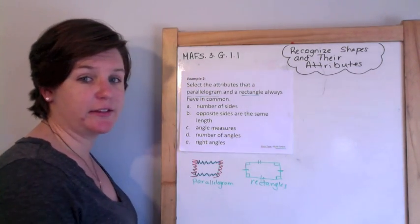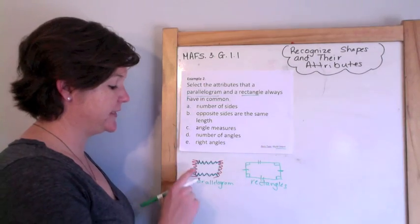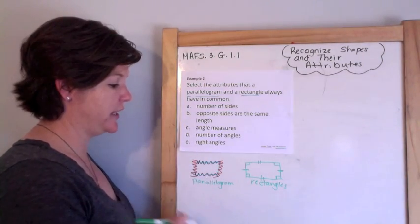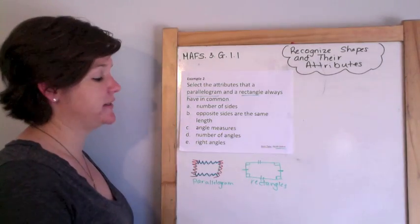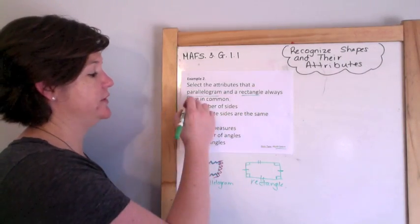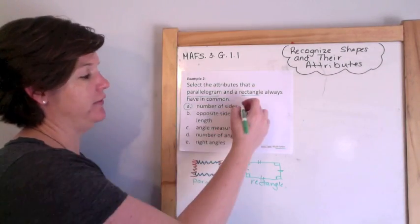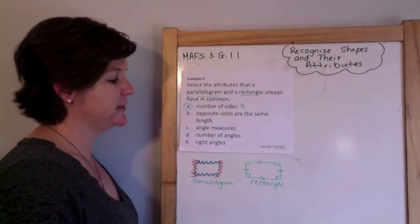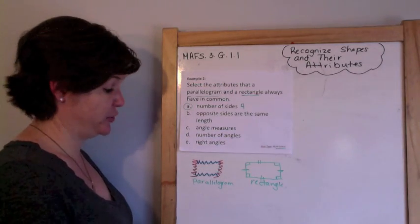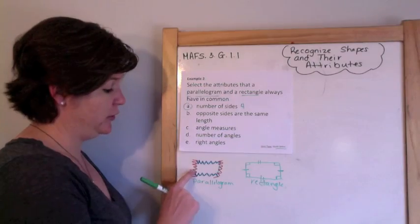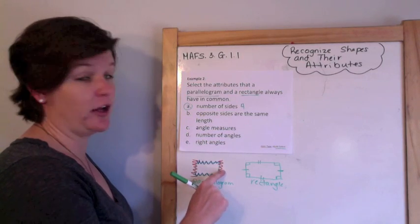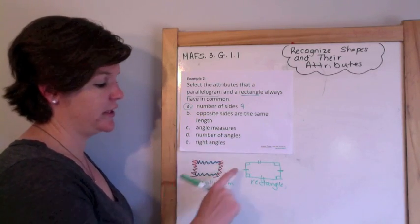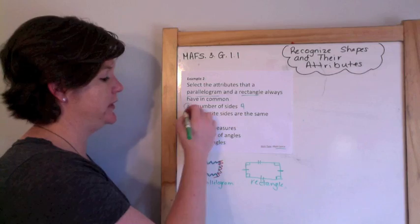Number of sides. A parallelogram has four sides, and a rectangle also has four sides. So that is correct. They both have four sides, always. The opposite sides are the same length. That's true for a parallelogram, too. Whatever this side is, this side also has to be, and vice versa, and that's the same thing for the rectangle. So B is correct.